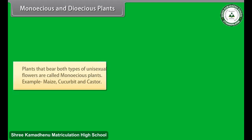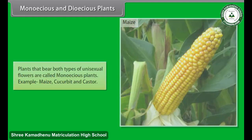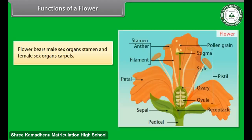Plants that bear both types of unisexual flowers are called monoecious plants. Examples include maize, cucurbit, and castor. Plants that bear only one type of unisexual flower are called dioecious plants. Examples include date palm and mulberry.